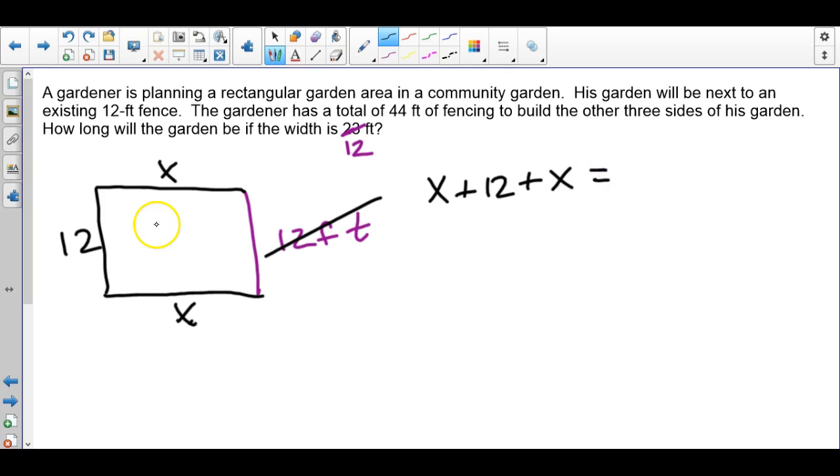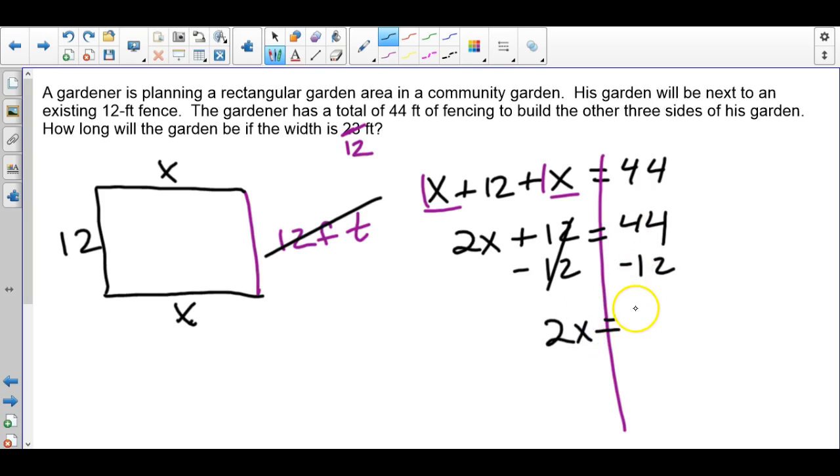We can say, well, I know these three sides added together—x plus 12 plus the other x—those should equal the amount of fencing I have. I have 44 feet of fencing. Now we have our equation set up. We can go and solve it using what we've done so far. The left side does have like terms: we have a 1x and another 1x that can combine together. 1x plus 1x is 2x. Now we do our opposites. Opposite of adding 12 is minusing 12. That's 32. Then that's 2 times x, so the opposite is dividing by 2. So x equals 16.